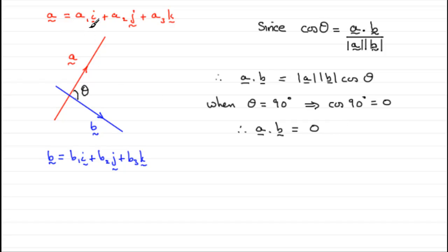And if A equals A1i plus A2j plus A3k and a similar result for B, then it follows that A1 times B1 plus A2 times B2 plus A3 times B3 must equal 0.